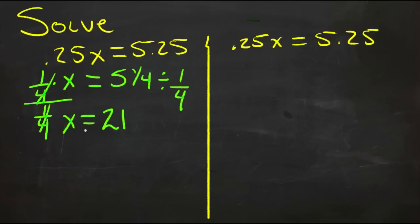So that would give us an answer of 21 for x, and we can check that .25 times 21 equals 5.25.